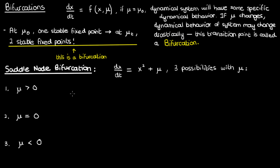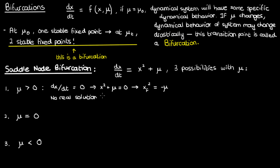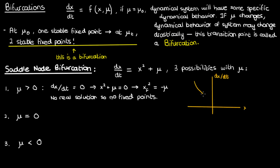What does the system look like if μ is positive? When we try to solve for the fixed points by setting dx/dt equals zero, we find that there's no real solution for x — no real value of x allows x² to equal negative μ. This means there are no fixed points when μ is positive. You can verify this by drawing the phase portrait — plotting dx/dt as a function of x — and finding it does not cross the x-axis.